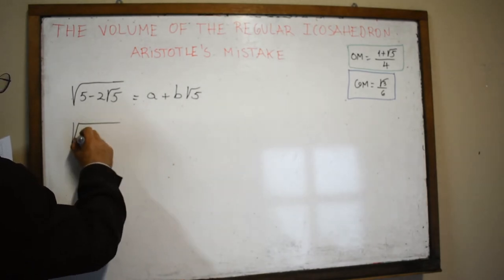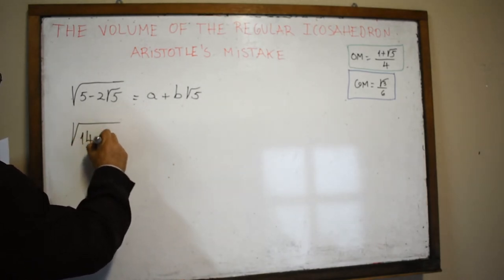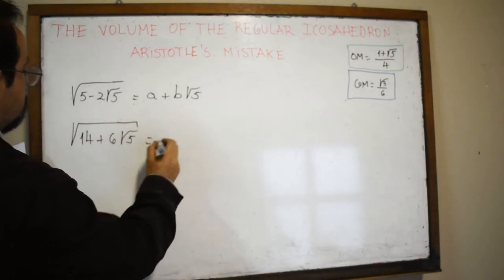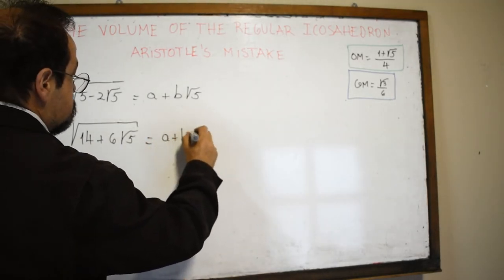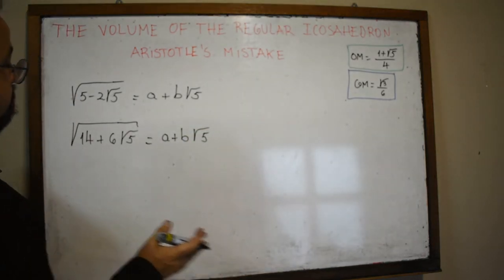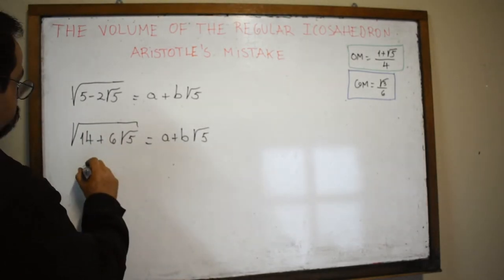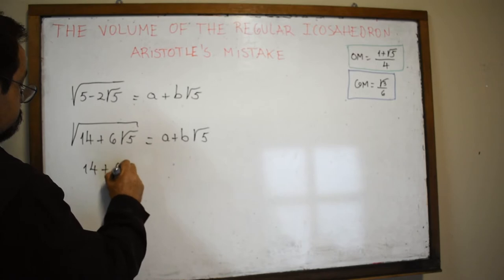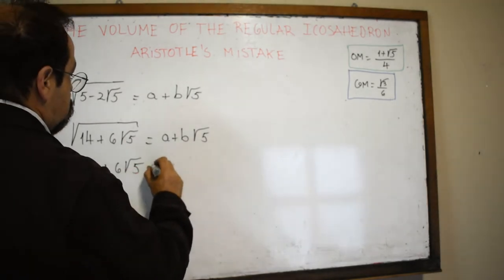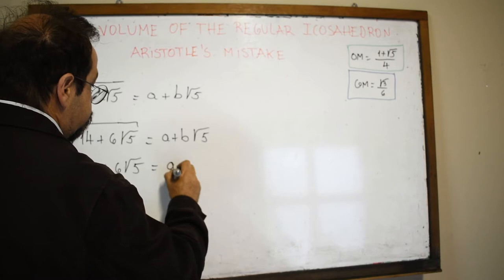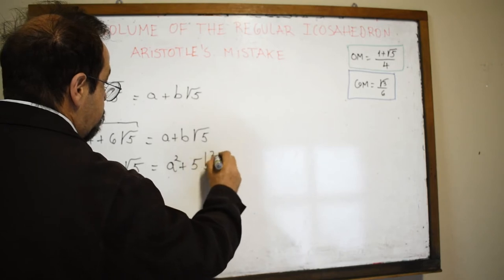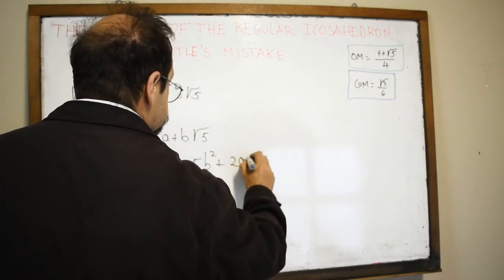For instance, consider √(14 + 6√5). We write this as a + b√5. Squaring both sides gives 14 + 6√5 = a² + 5b² + 2ab√5.